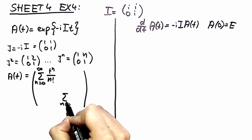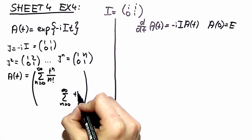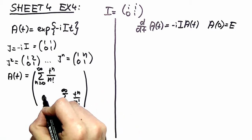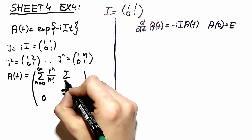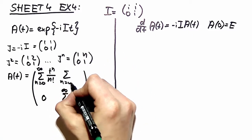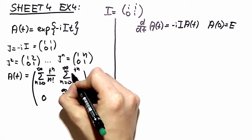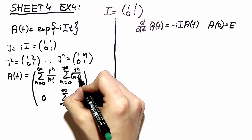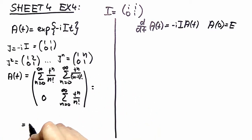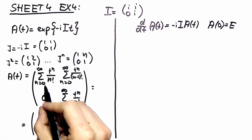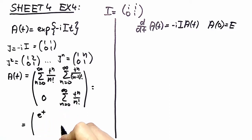Here 0 and then you have here an n which cancels with the n factorial and leaves us with a t to the n over n minus 1 factorial. Now you spot your exponential functions over here.